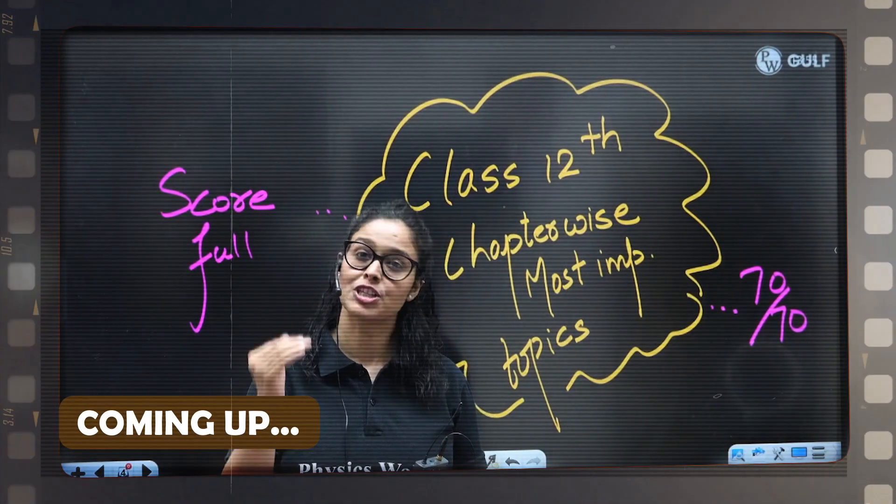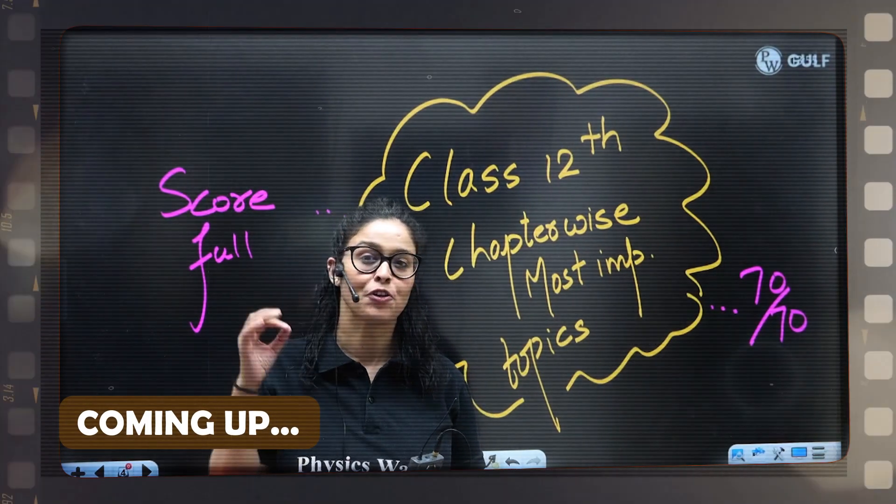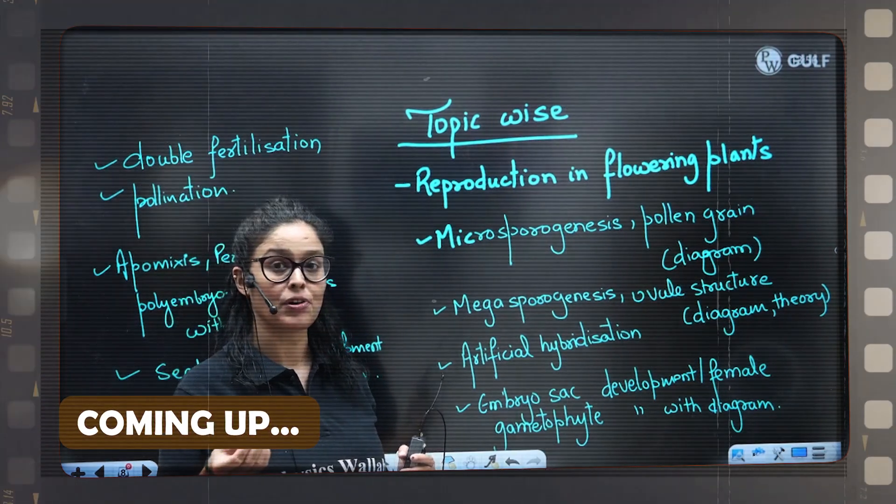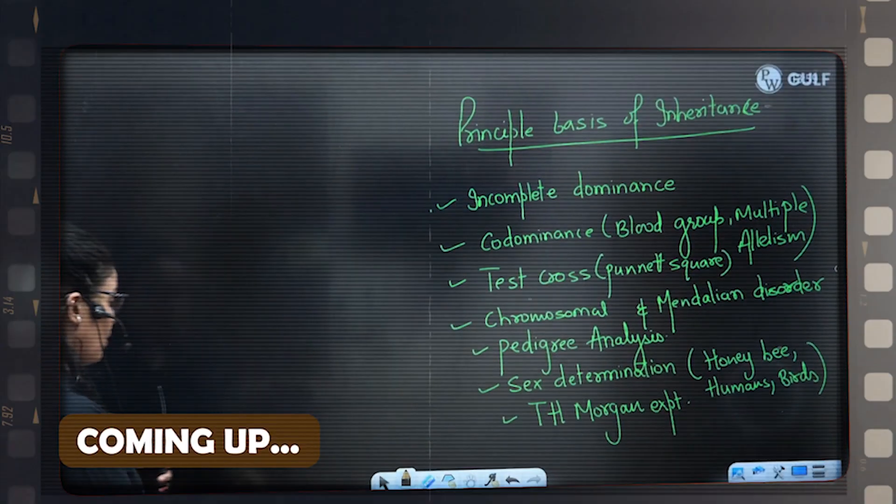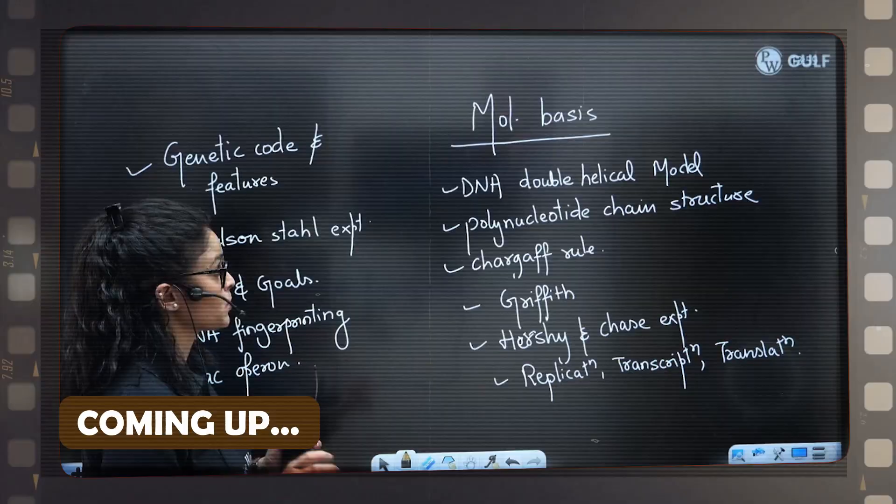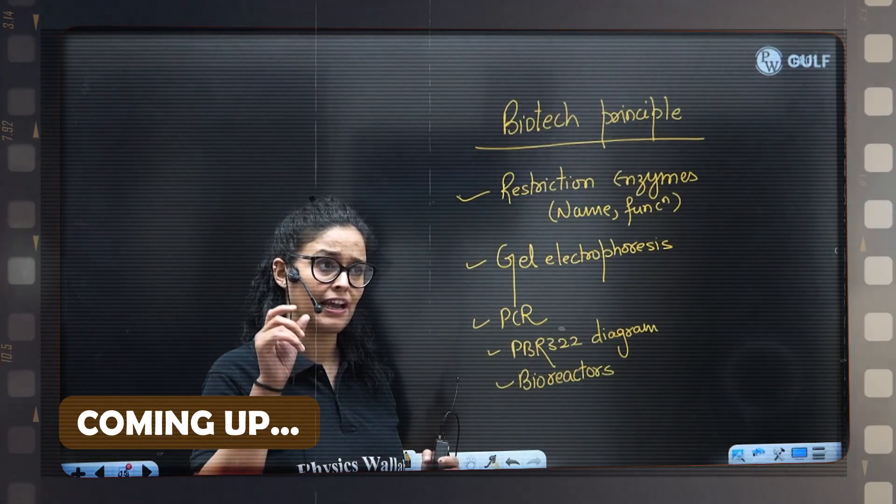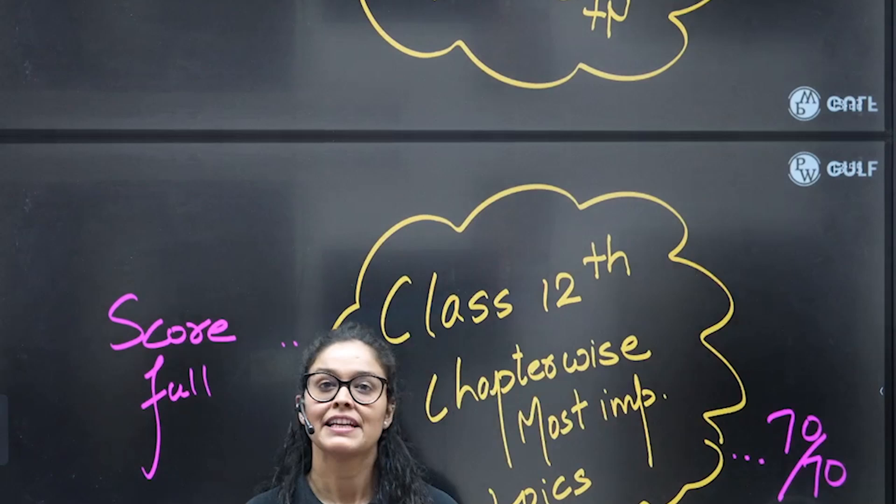This video covers what kind of questions they're asking from which topics so you'll be prepared well for your board exam. These topics - microsporogenesis, pollen grain - are very important. Their diagrams are very important. Make sure you are preparing these chapters and topics well. Biotechnology principles, restriction enzymes, their names and functions, or they have given EcoR1 in very detail.